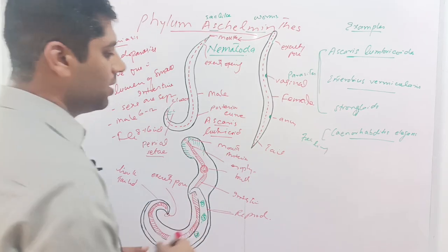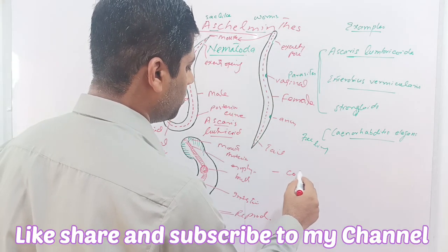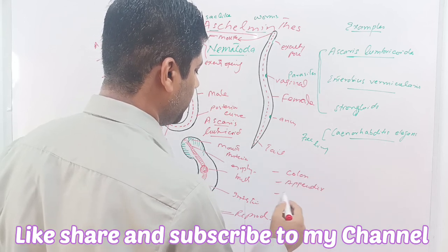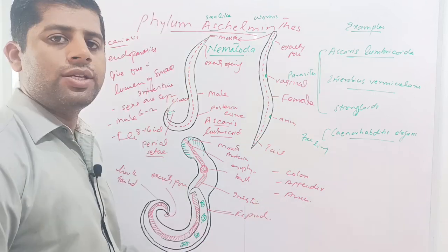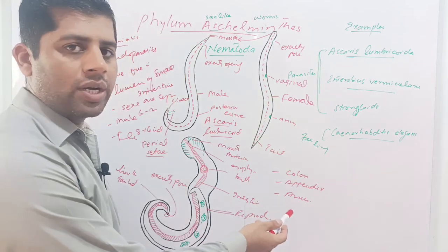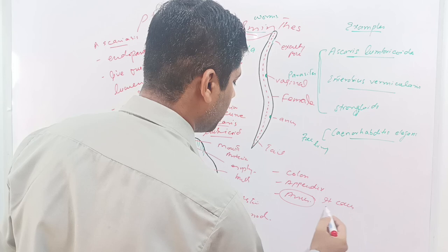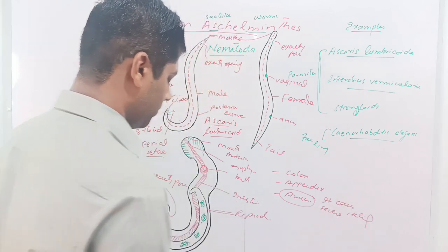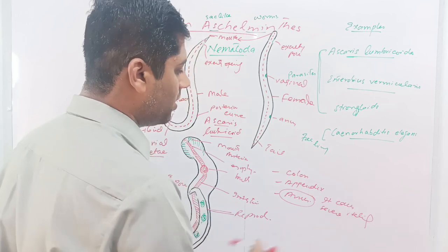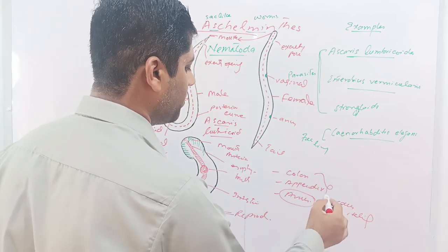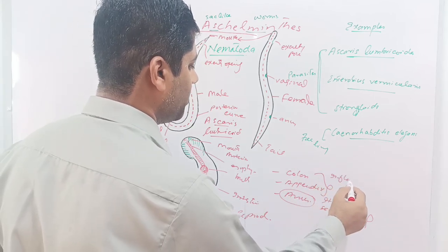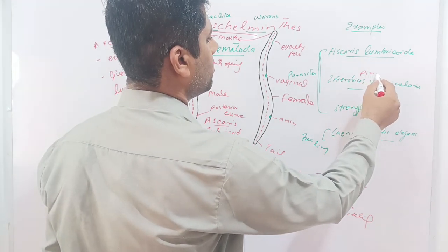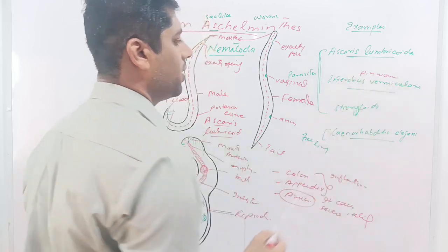Enterobius vermicularis infests the colon, appendix, and anus. The incidence is highest in children compared to adults. In the anus it causes severe itching, and it causes inflammation of the mucous membrane of the colon and appendix. Enterobius vermicularis is also called a pinworm due to its shape.